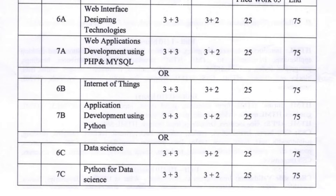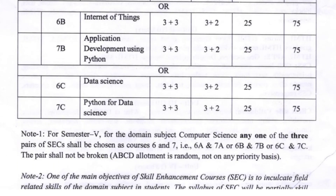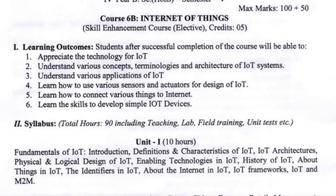Section A has 2 papers: 6A and 7A. Section B has 2 papers: 6B and 7B. Now, regarding Section B, each paper has its own syllabus. The 6B paper title is Internet of Things.